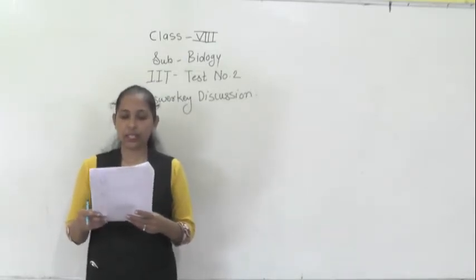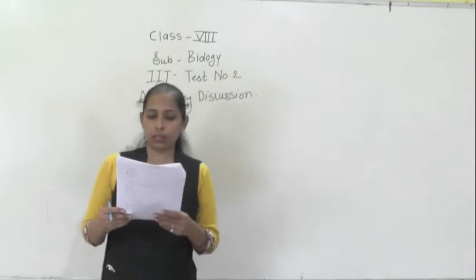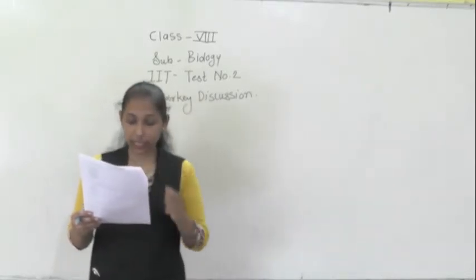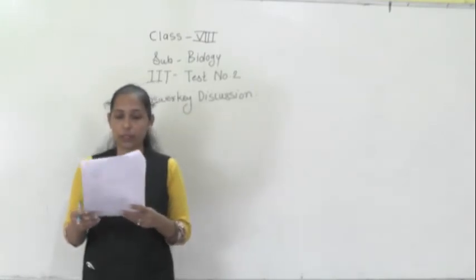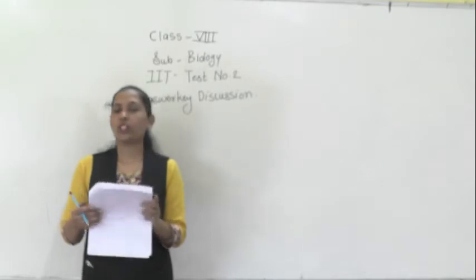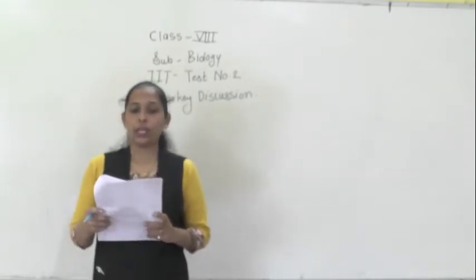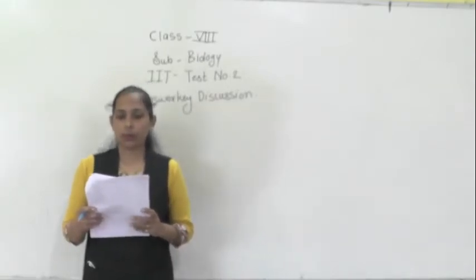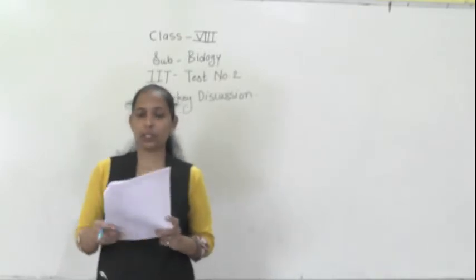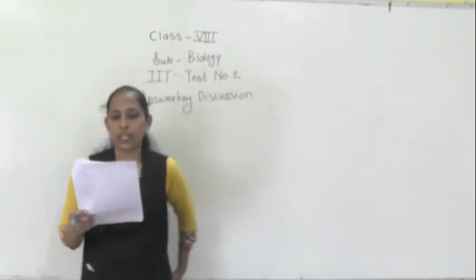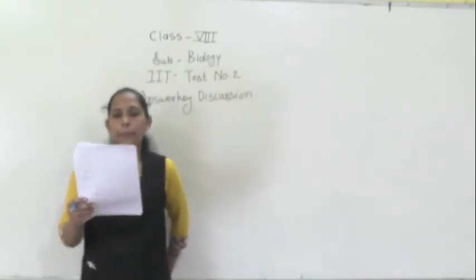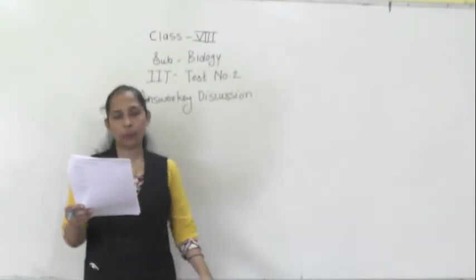Question number six: the term cell was coined by Robert Hooke. Question number seven: cell theory was proposed by Schleiden and Schwann.